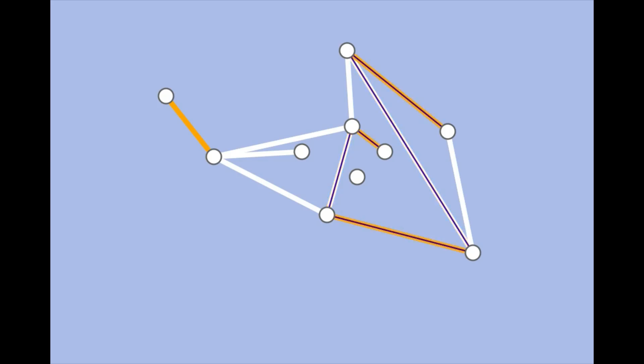Now take a look at what happens when we flip the matched and unmatched edges. Now there are three matched edges and two unmatched edges. In other words, the number of matched edges increased by one.